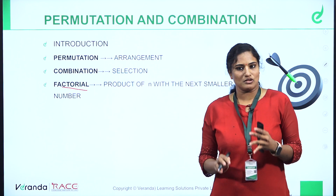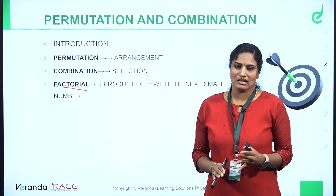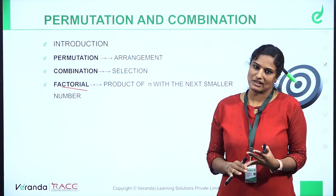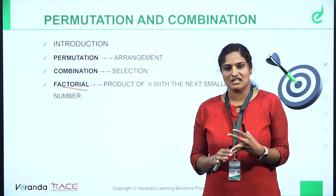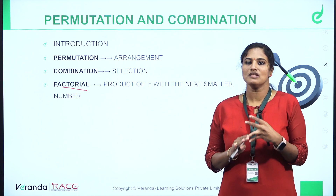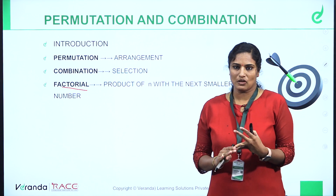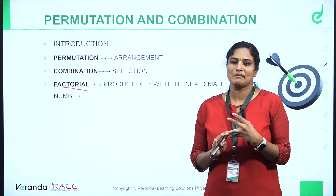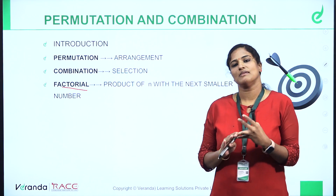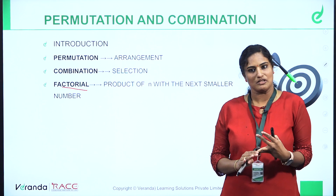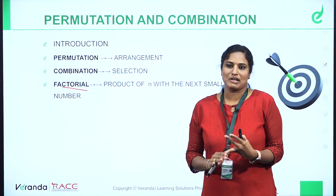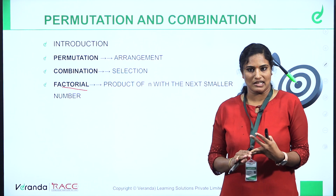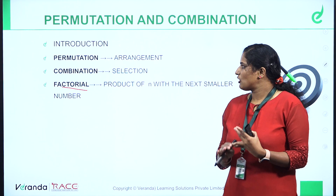We are familiar with factorial. It is a multiplication of numbers: 8!, 7!, 6!, 5!, 4!, 3!, down to 1. This mathematical operation is not combination — permutation is not combination. Factorial is the core operation for permutation.